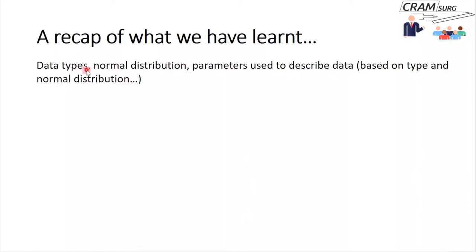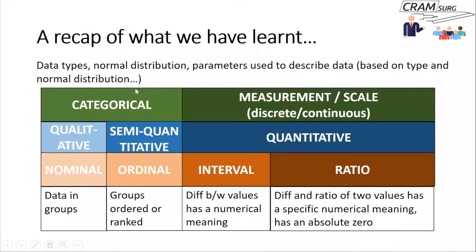We talked about data types. We talked about normal distribution. We talked about parameters that we use to describe data, which is based on the type of the data and whether the data is normally distributed or not. Here's a figure I've shown on a couple of occasions on the different ways in which data can be classified. You can classify data as categorical or measurement or scale. Categorical data can be classified as qualitative or semi-quantitative, and measurement or scale data is also called quantitative data.